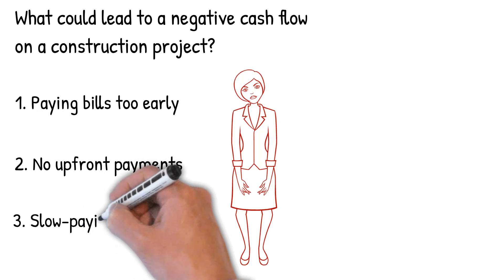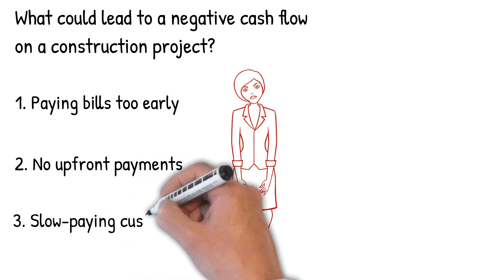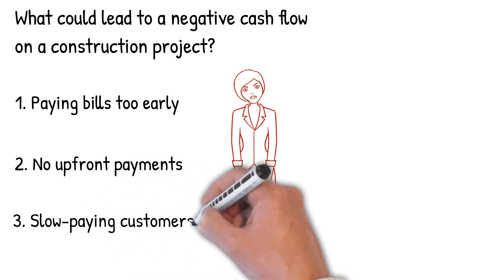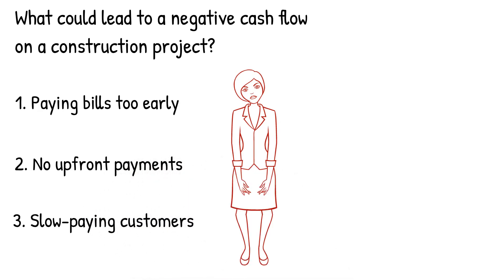Slow paying customers. A contractor's cash flow is almost bound to take a hit when customers are slow to pay their bills. The further a company is from the top of the payment chain — such as a subcontractor, for example — the longer it could have to wait.